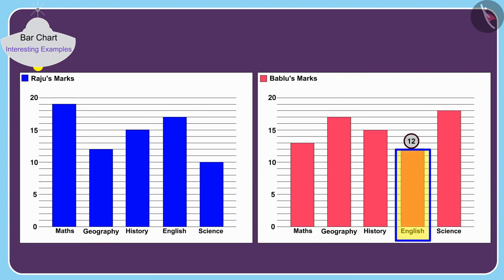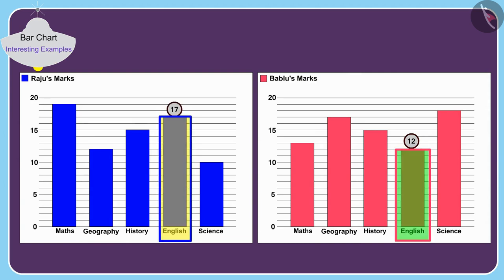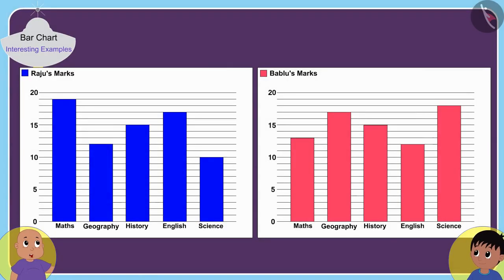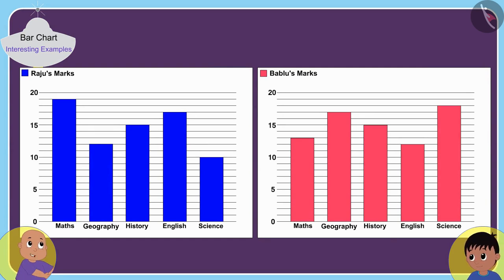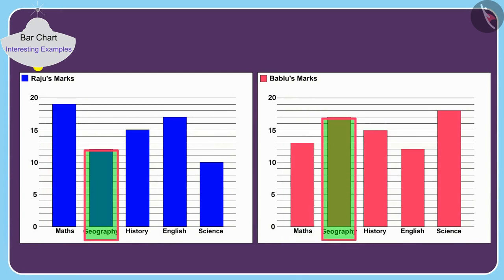And in English, Babloo has got 12 marks and Raju has got 17 marks, so in English Babloo got 5 marks less than Raju. Look Raju, your marks in this subject are the least among the marks we both got. Children, can you tell in which subject Raju has got the least marks?